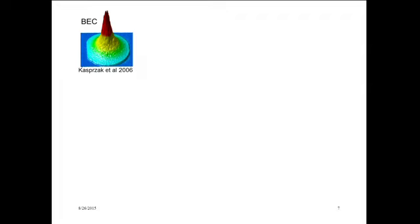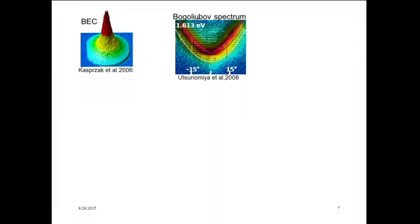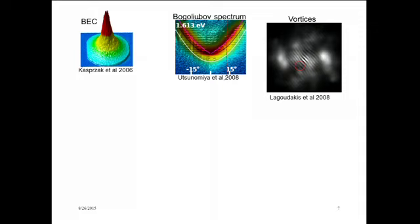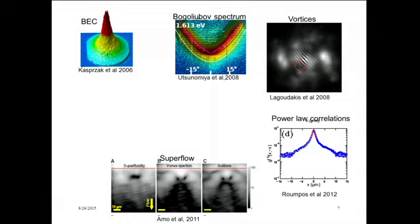So what's been seen in experiments? This is the momentum distribution you get by looking at the light, a paper from 2006. If you look at what happens to the dispersion of the lower polariton branch when you go into a putative condensed phase, you see something quasi-linear, like a Bogoliubov spectrum. You can look at real space images demonstrating coherence, seeing fringes and vortices. You can see half vortices because there's a polarization degree of freedom. You can find power law correlations.